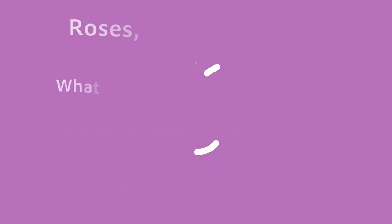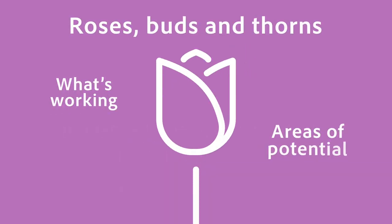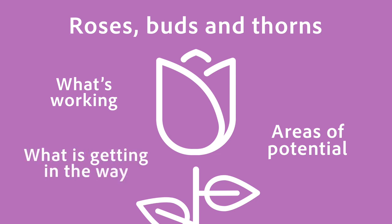Students point out what's working — roses — areas of potential — buds — and what is getting in the way — thorns.